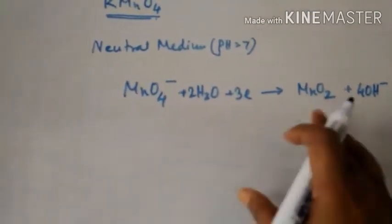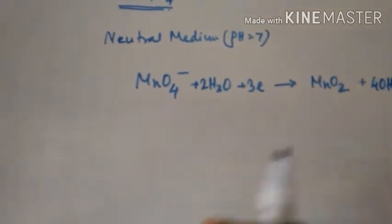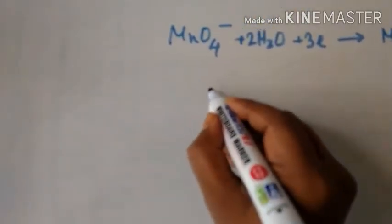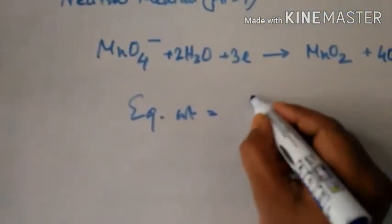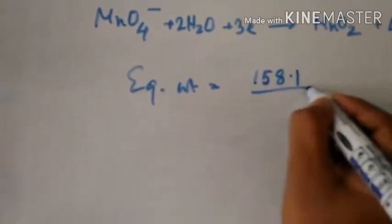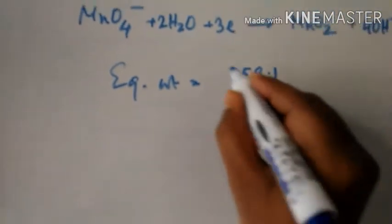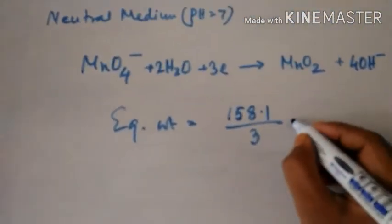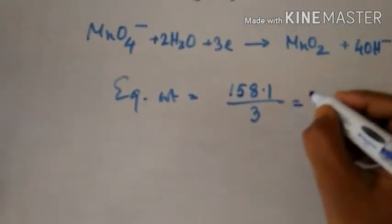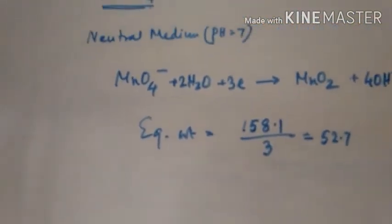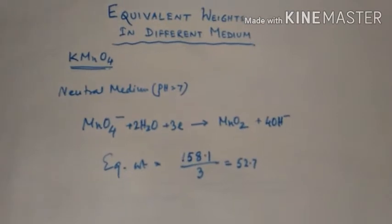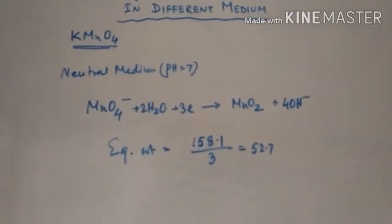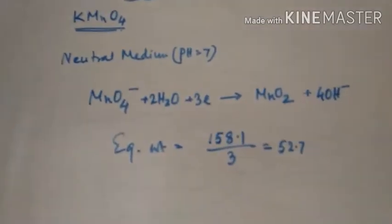This gains 3 electrons. Manganate forms manganese dioxide, gaining 3 electrons. Calculating the equivalent weight similarly to the previous case, we get 158.1 divided by 3, which equals 52.7. In neutral medium, KMnO4 gives an equivalent weight of 52.7 because it gains 3 electrons.